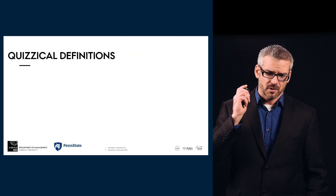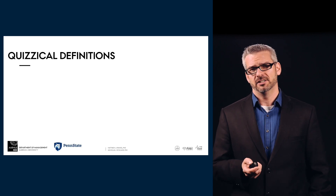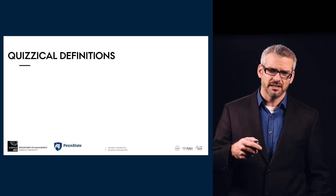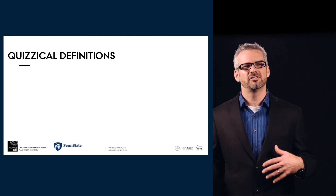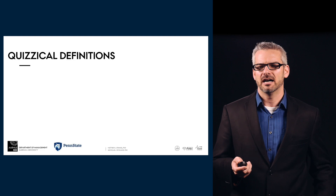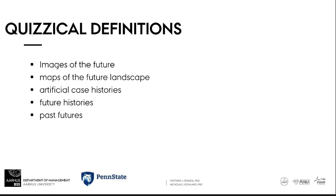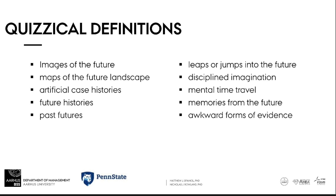We find a number of quizzical definitions, which are fortunate because they provide some notions of what scenarios are, but unfortunate because they may not be precise or may even be a bit distracting. For example, we have definitions of scenarios as 'images of the future,' 'maps of the future landscape,' 'artificial case histories,' 'future histories,' and 'past futures.'